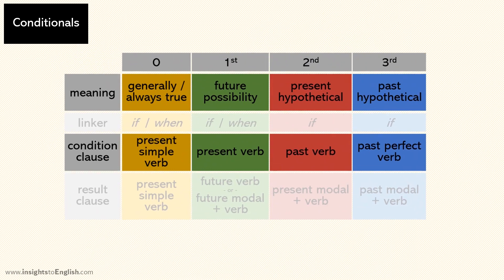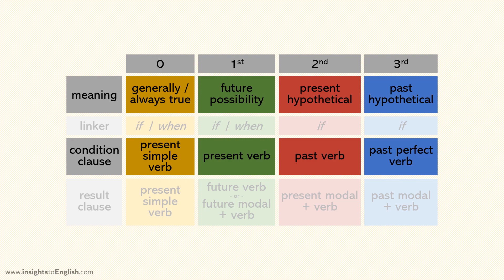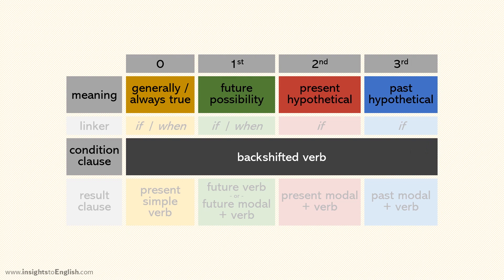Let's go back to the table. We could either memorize which tense we need to use for each type of conditional, or we could just backshift the verb from its meaning, no matter which conditional it is. That's it.